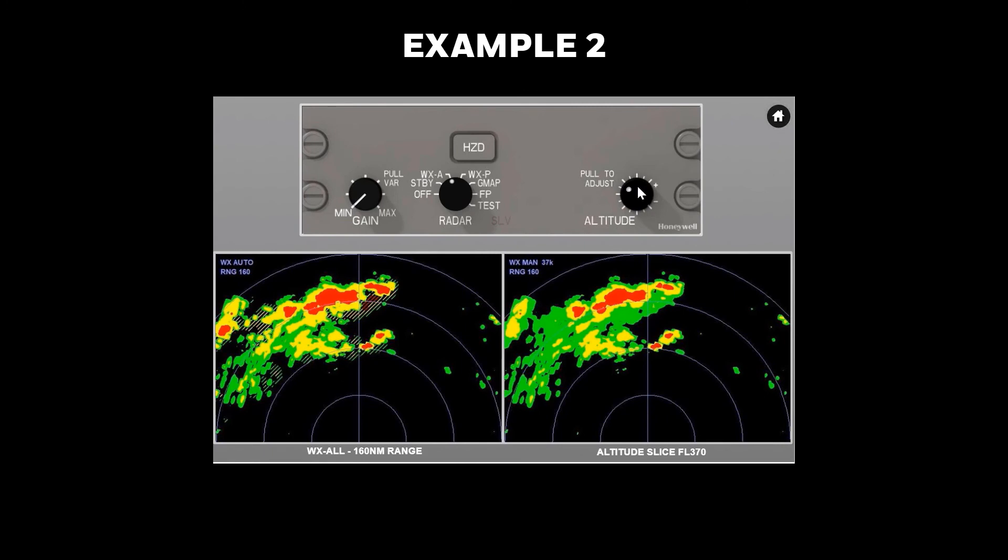The line is now just outside 80 nautical miles, and the aircraft has climbed to flight level 420. Again, the auto mode alone might be interpreted to indicate there is no path through. Looking at an altitude slice at flight level 400, the analysis shows that most of the action is to the right of track, and the potential path through is persisting.